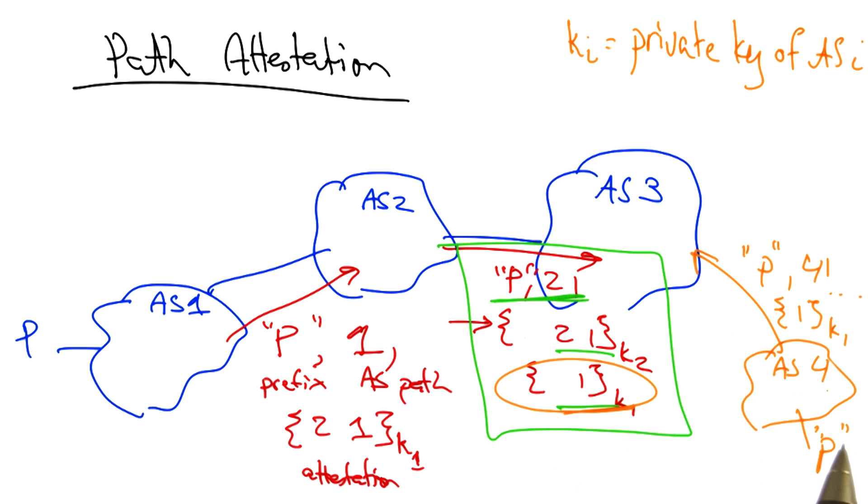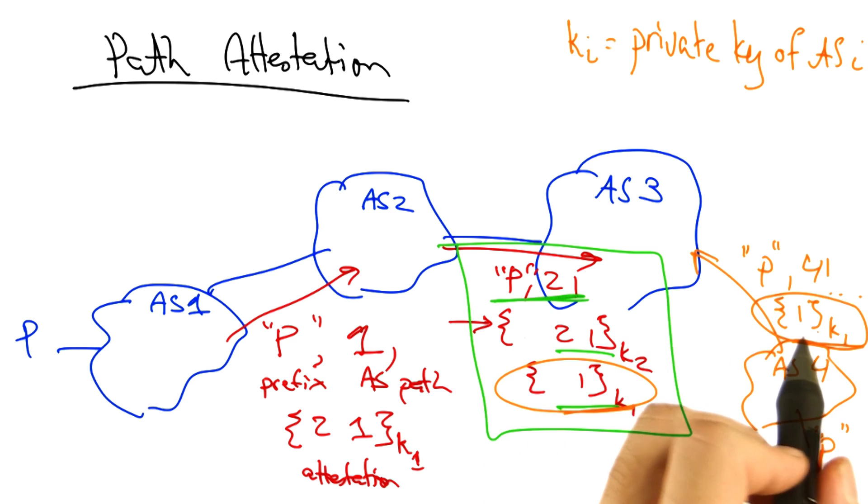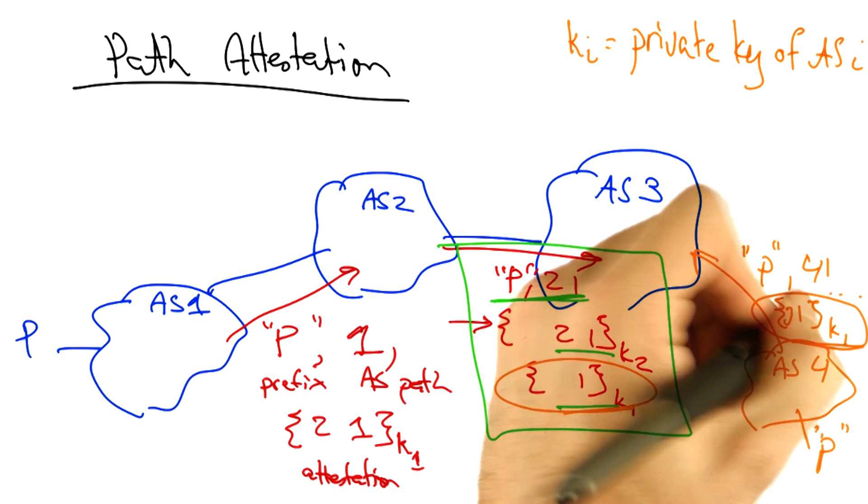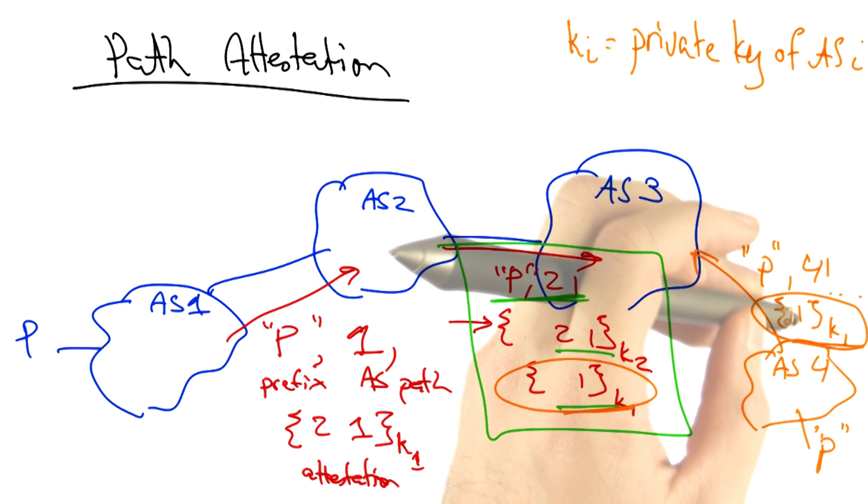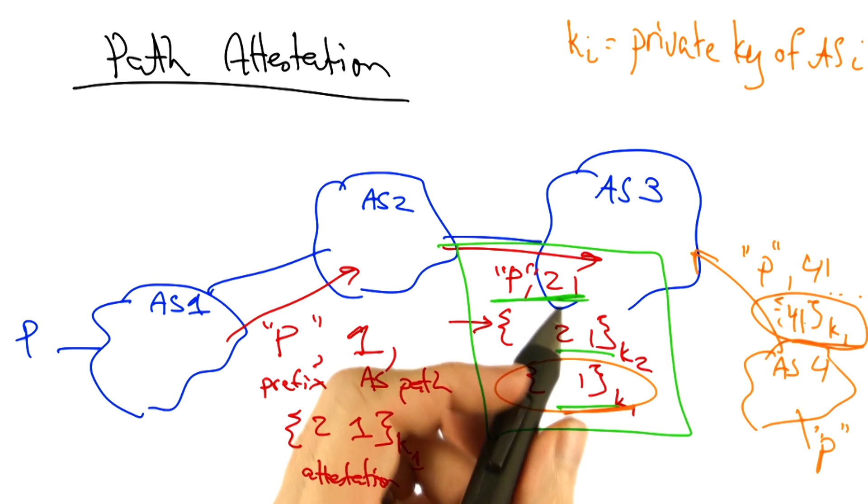Thus an attacker, AS four, could claim that it was connected to prefix p via AS one when in fact no such link existed, simply by stealing or replaying the path attestation one that's signed by K one. But note that in reality, AS one never generates this signature. In fact, it generates the signature two one. Or in this case, it would somehow have to generate the signature four one.